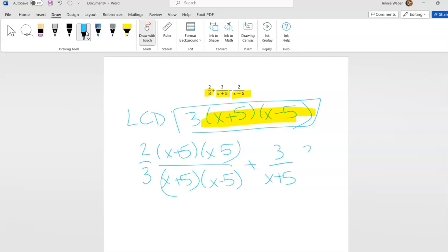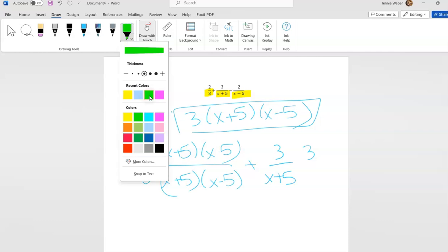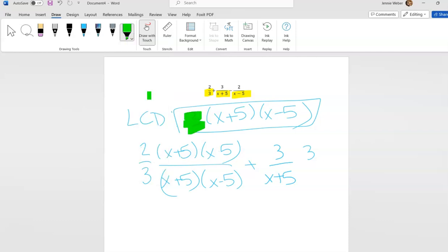In this next one, same thing. I ask myself what's this LCD missing. It's missing a 3, and it's also missing this one here, so I have to multiply this by (x-5). So this is 3(x-5).